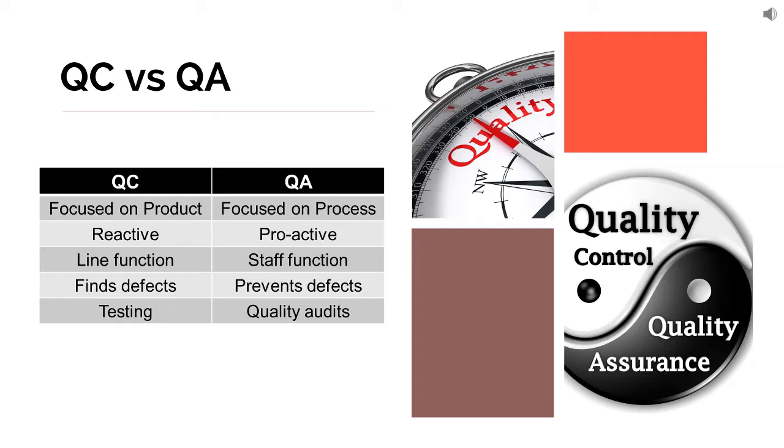Coming to QC, QC is considered to be reactive, whereas QA is considered to be proactive. In QC, you look at the product — if you see a problem, you attend to that problem and make sure it is not repeated. Basically all these activities happen once you have a problem. Whereas in QA, you make sure beforehand that your processes are set so that you don't get into trouble. That's the focus of QA being proactive.